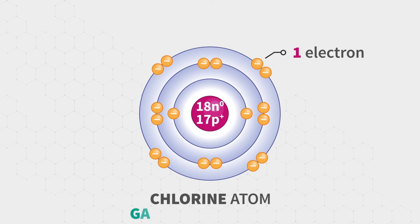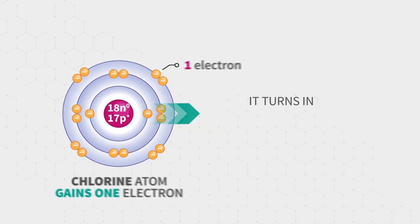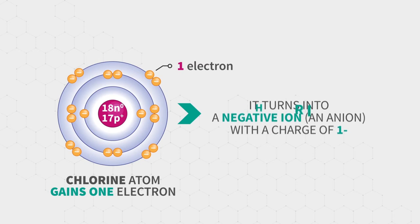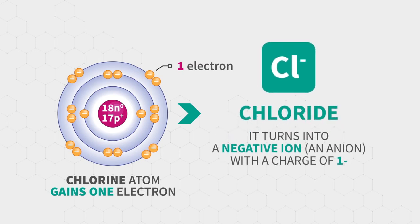When chlorine atom gains one electron, it turns into a negative ion, an anion, with a charge of one minus. It is called chloride and it is written as Cl minus.